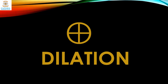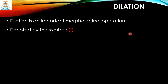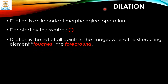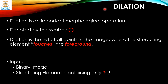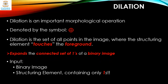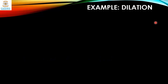Let's take a detailed look at the concept of dilation. Dilation is an important morphological operation and we usually use a plus symbol within a circle to denote it. Dilation is the set of all the points in the image where the structuring element touches the foreground. The input is a binary image and a structuring element containing only ones.